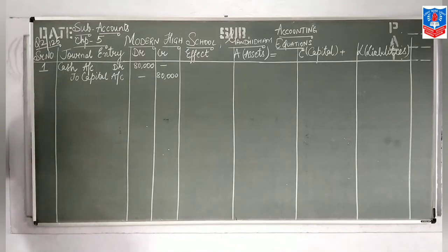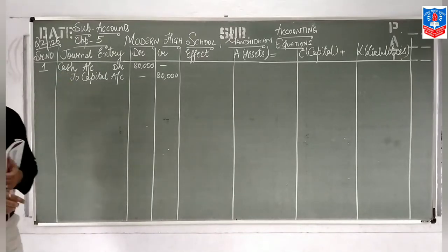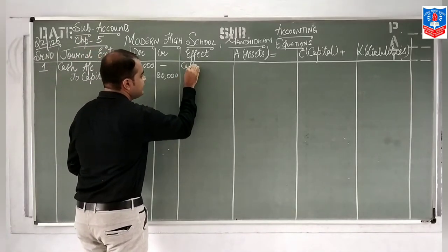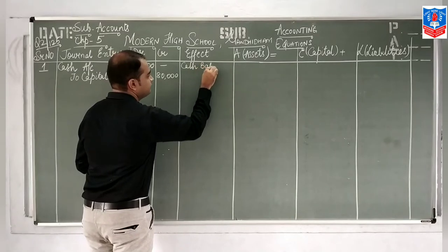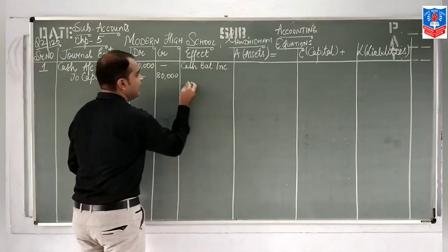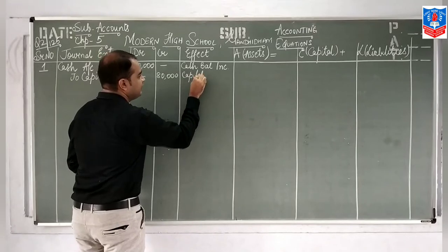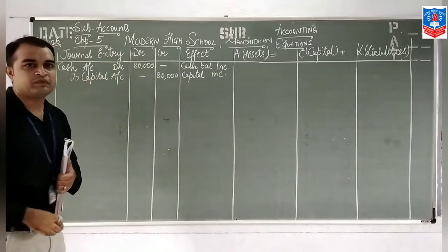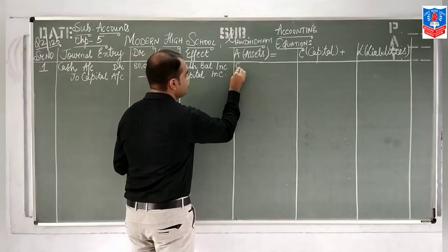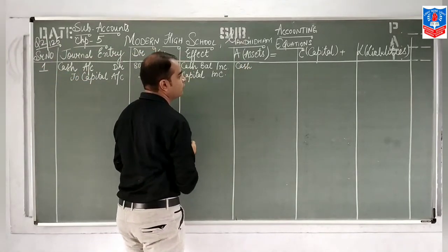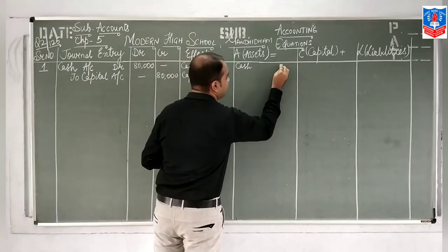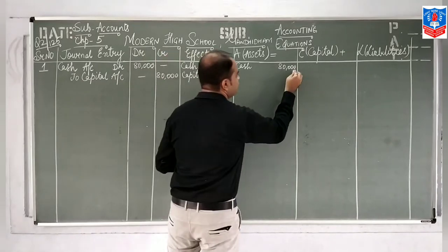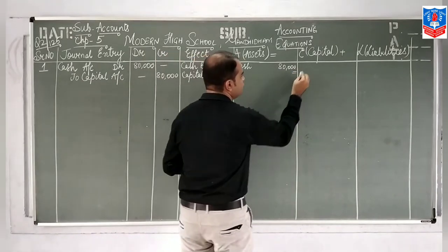Obviously we have introduced cash, so cash balance increases. And even capital increases. Cash is our asset. So in the column of cash you will show 80,000, which equals capital 80,000.